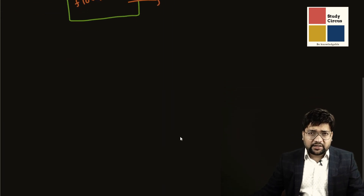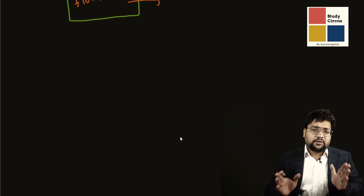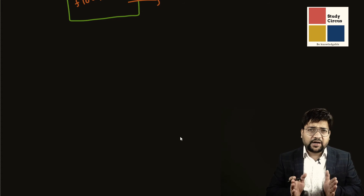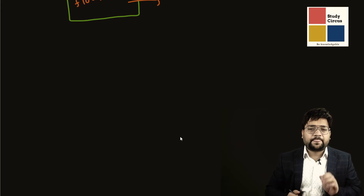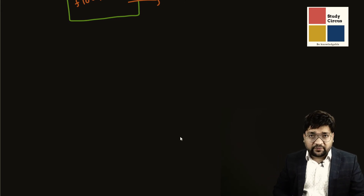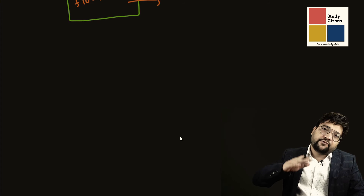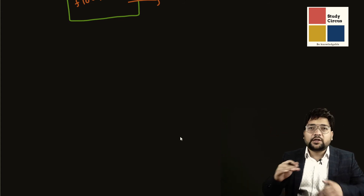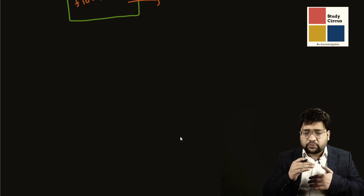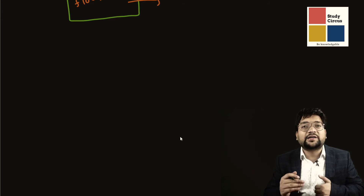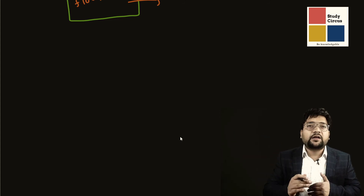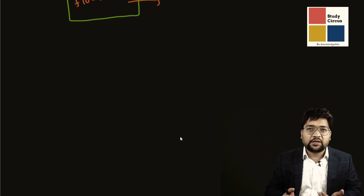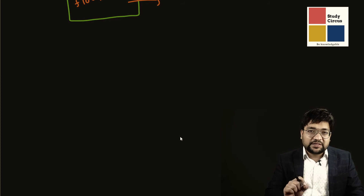So why are they called fundamental? Because we have accepted that using these seven fundamental physical quantities, everything and anything can be understood. Every other physical quantity that is not among these seven is not fundamental — we say those are derived, derived from these seven.